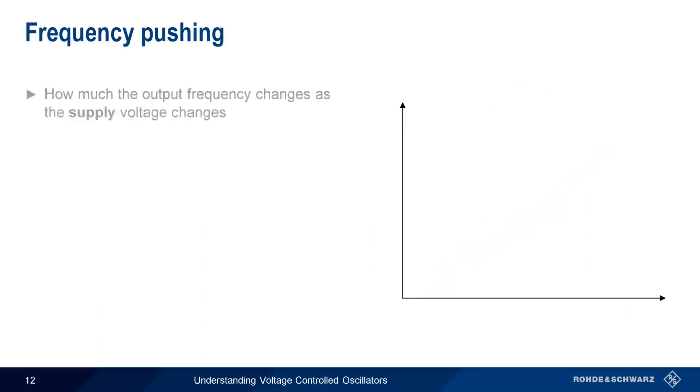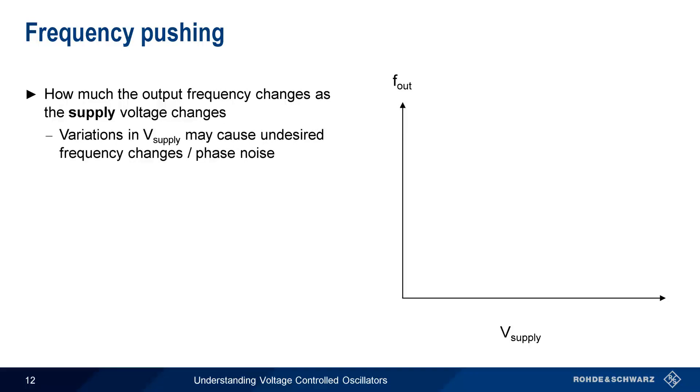Frequency pushing is a measure of how much the VCO output frequency changes as the supply voltage changes. We want, and we expect, the VCO output frequency to change when the tune voltage changes, but the output frequency of real-world VCOs often is also a function of the supply voltage.